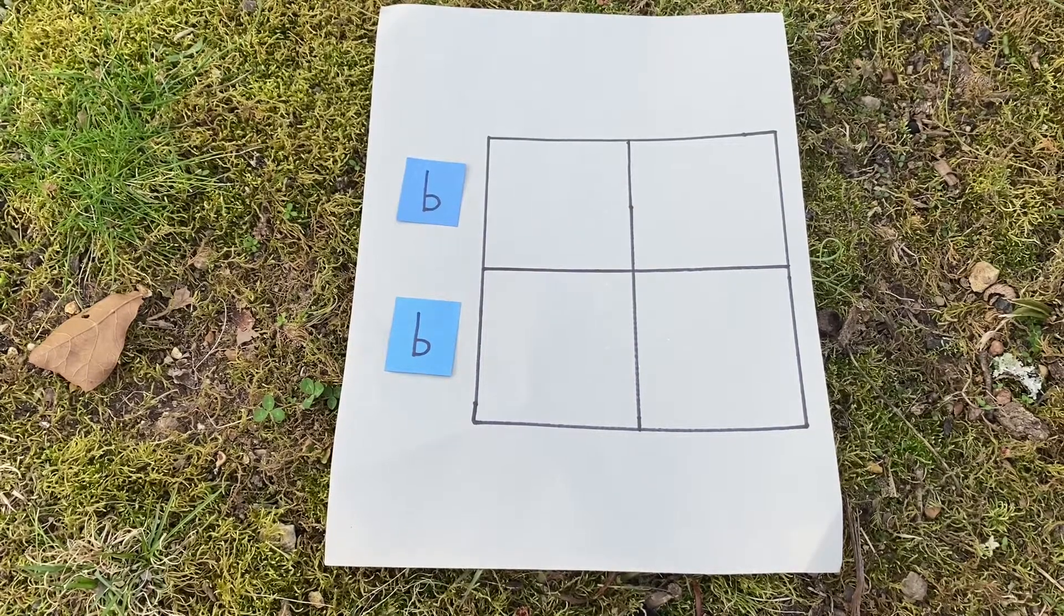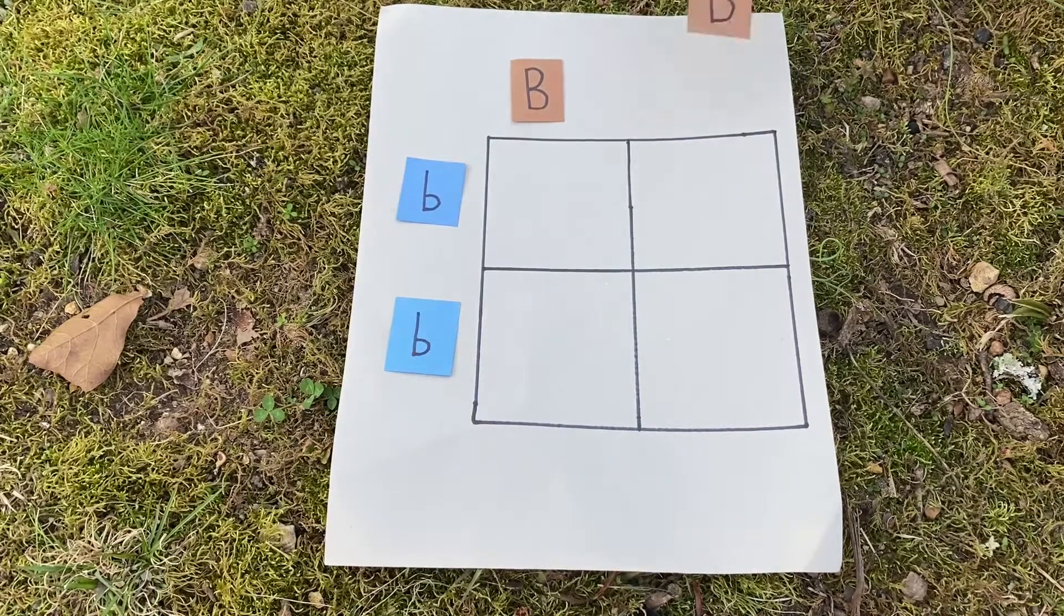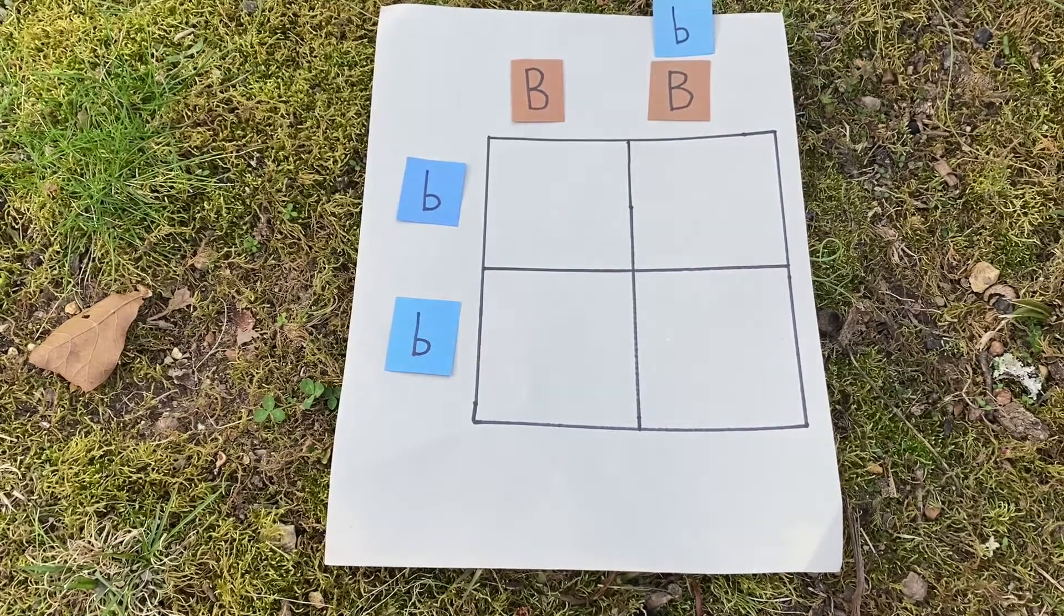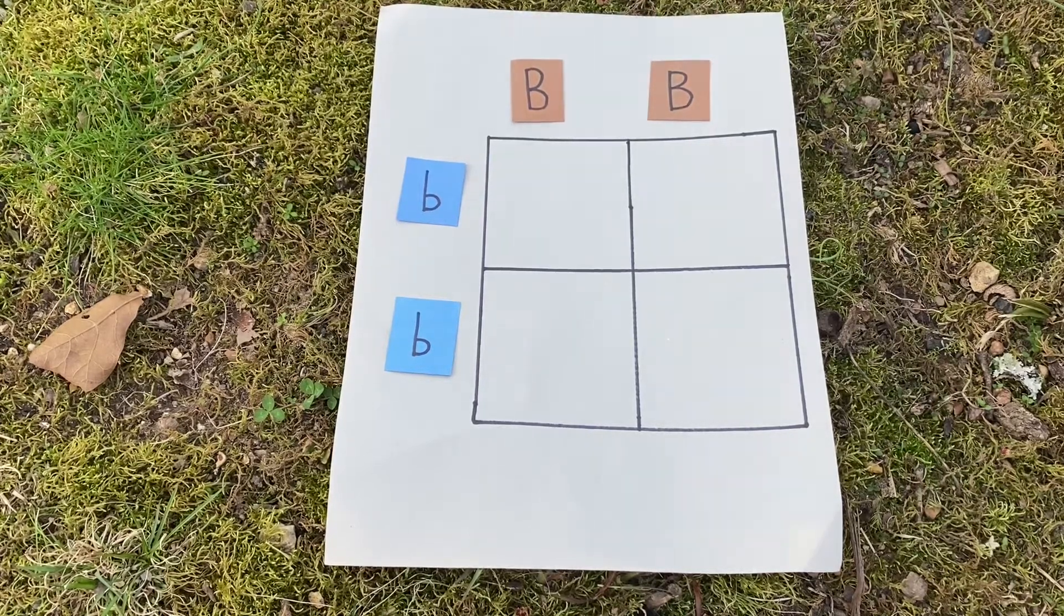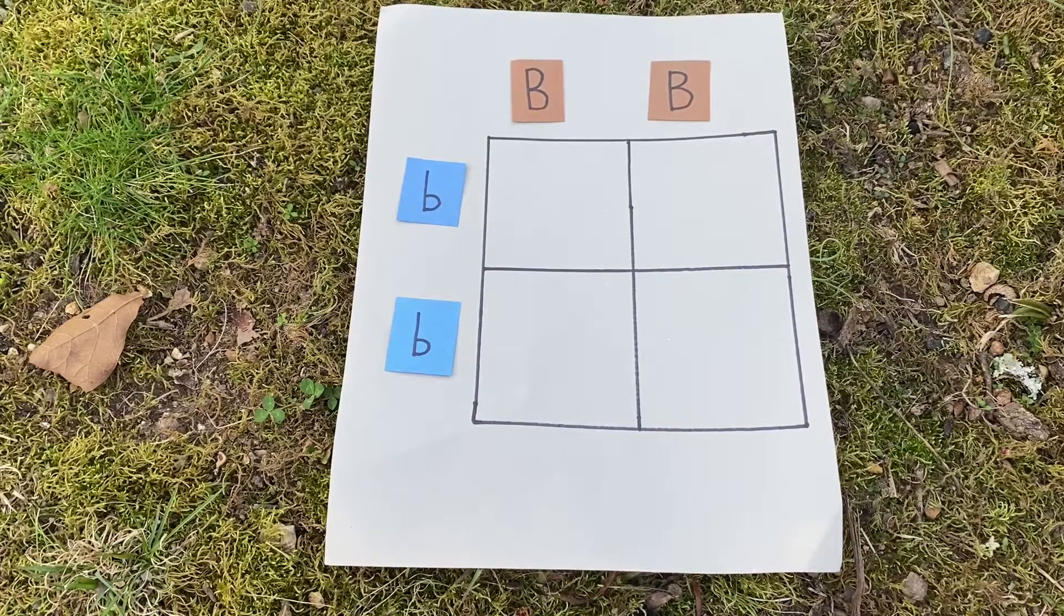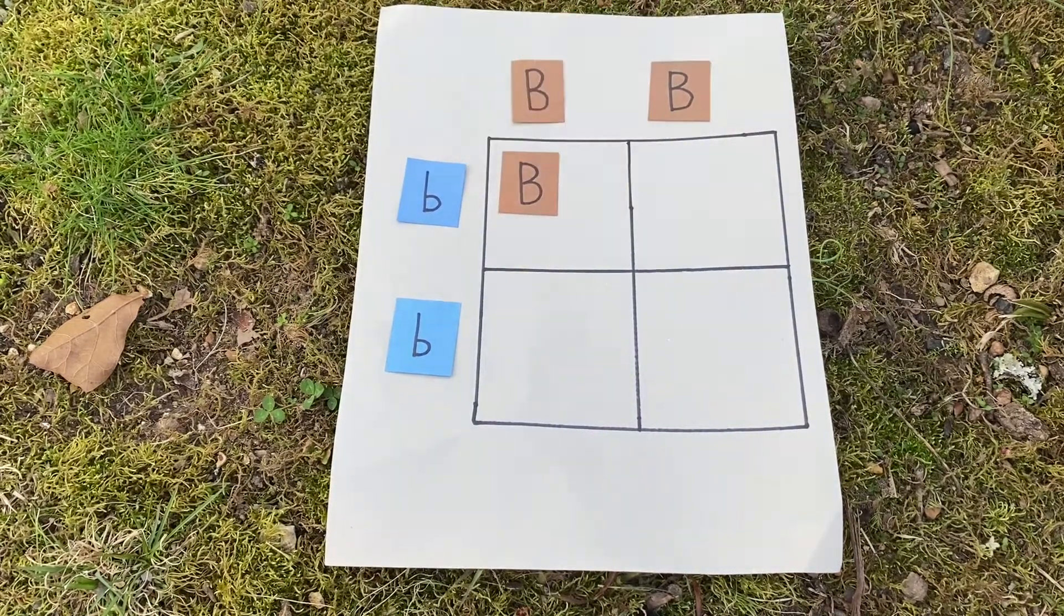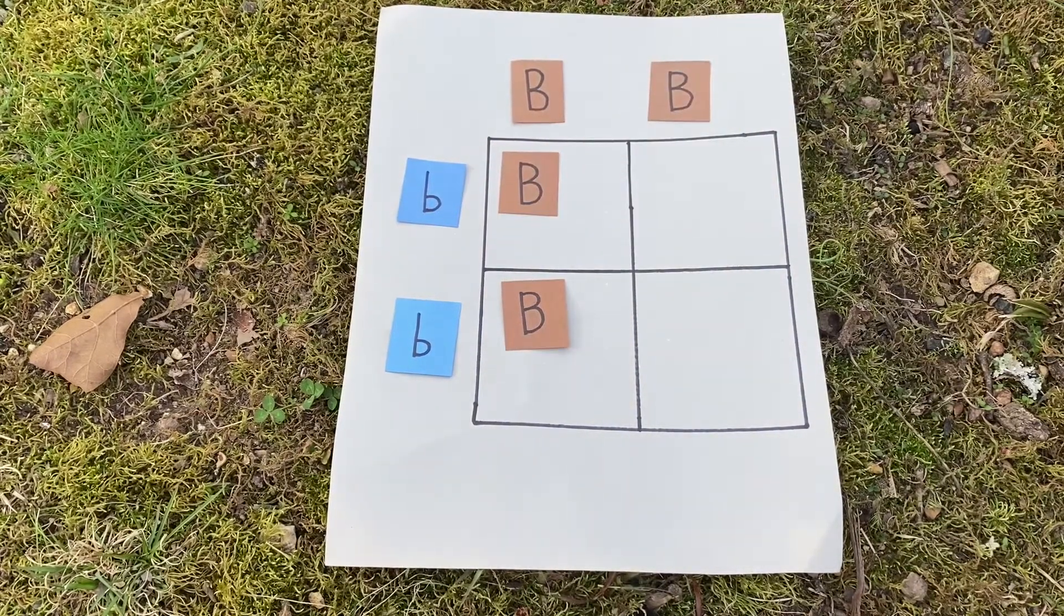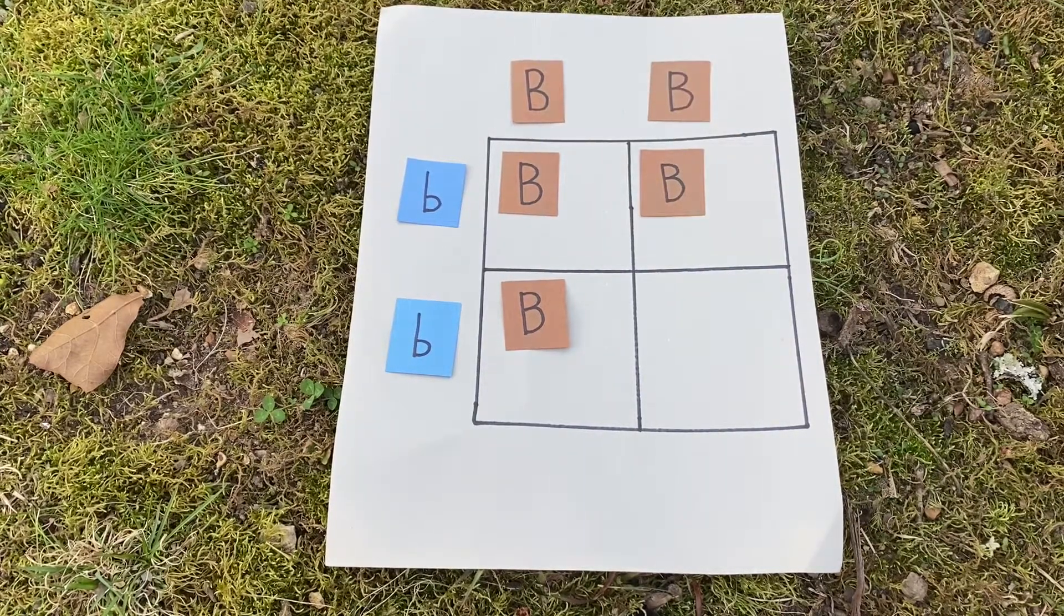Now say you have a parent with brown eyes. They're going to have at least one large B and then either another large B or a small b. In both of these cases, the parent's going to have brown eyes. Let's start off with the case of the parent who just has both large B's. Now what you're going to do is you're going to take the large B and you're going to put it in this square and this square. Now you're also going to look at this B and you're going to put it down in this square and then the one below.